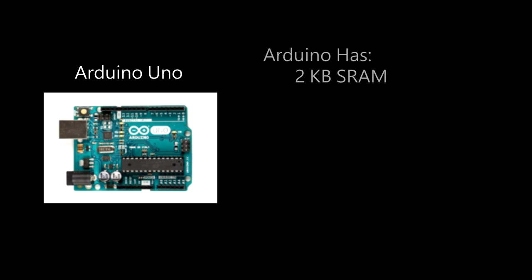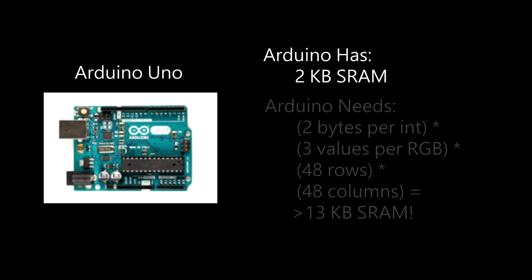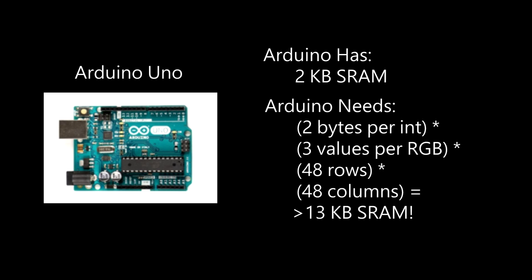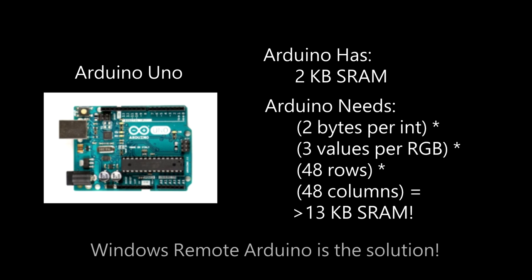But there's a problem. An Arduino only has a small amount of RAM — less than the amount needed to run a sketch and store RGB values for all of the pixels in the LED curtain. By using Windows Remote Arduino, the Arduino can offload the computationally heavy work to the Windows phone, which can then feed the Arduino color information strip by strip.